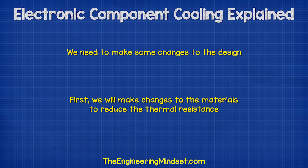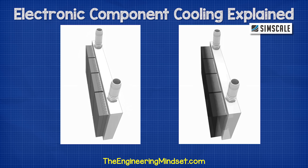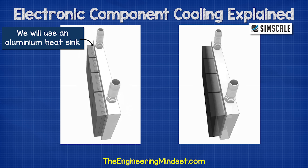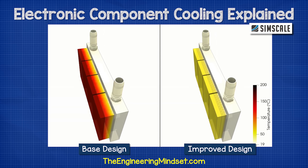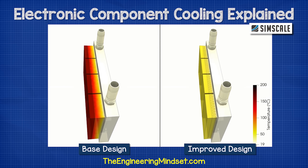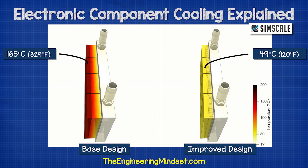The first change we will make is to the materials. We will use aluminium for the heatsink because this has a very high thermal conductivity, meaning heat can pass through it much easier. Between the IGBTs and the thermal block, we will also use a thinner layer of thermal paste, so that the IGBTs are closer to the heat transfer area, making it easier for the heat to reach the cooling liquid. As you can see, these simple changes have made a dramatic effect. Our IGBTs are now down to around 49 degrees Celsius, which is perfect because it's below our thermal limit of 90 degrees, and it also provides a good buffer before we would hit that limit.